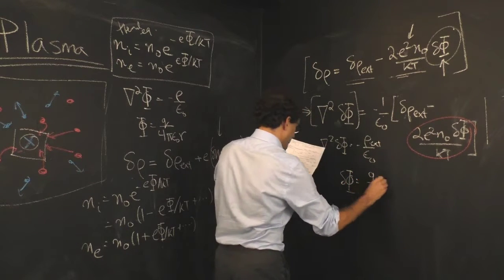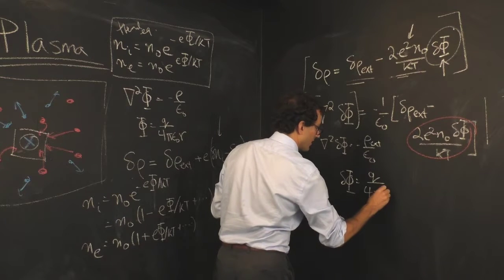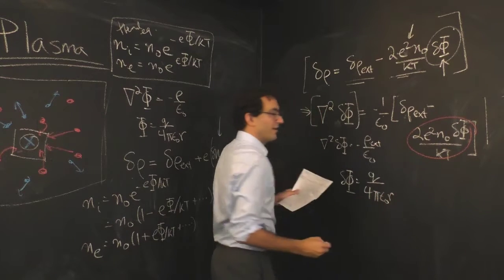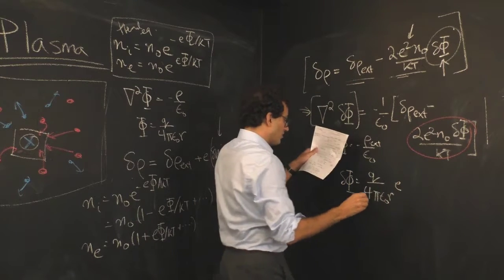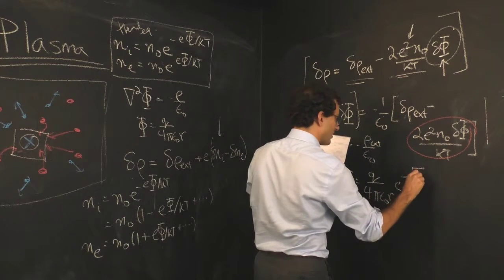The induced potential is q over 4 pi epsilon naught r. Very good, that's the standard electrostatic rule, but we also induce this exponential cutoff.